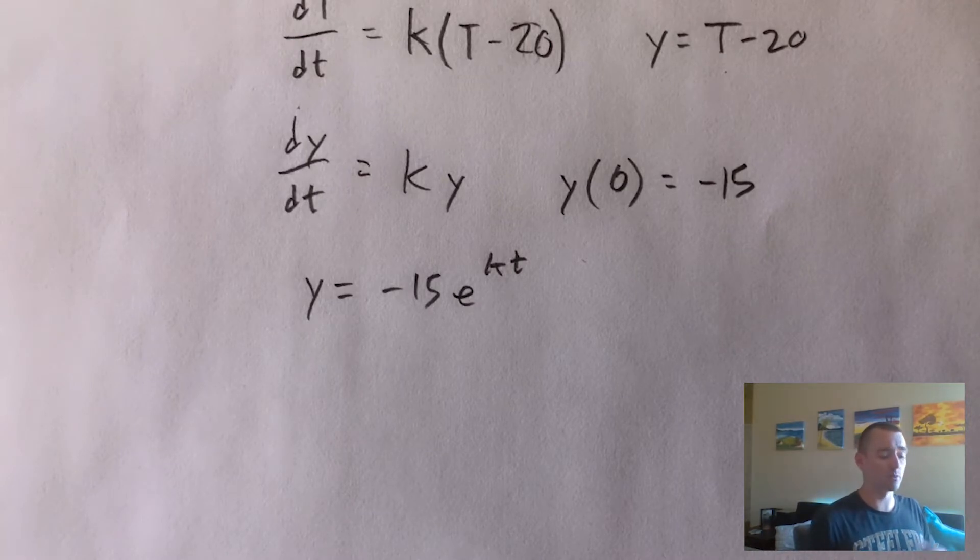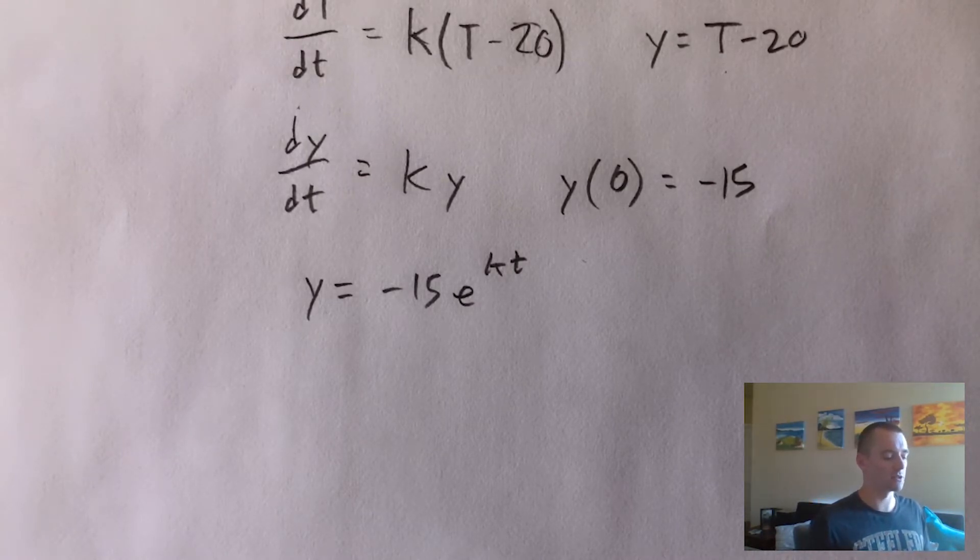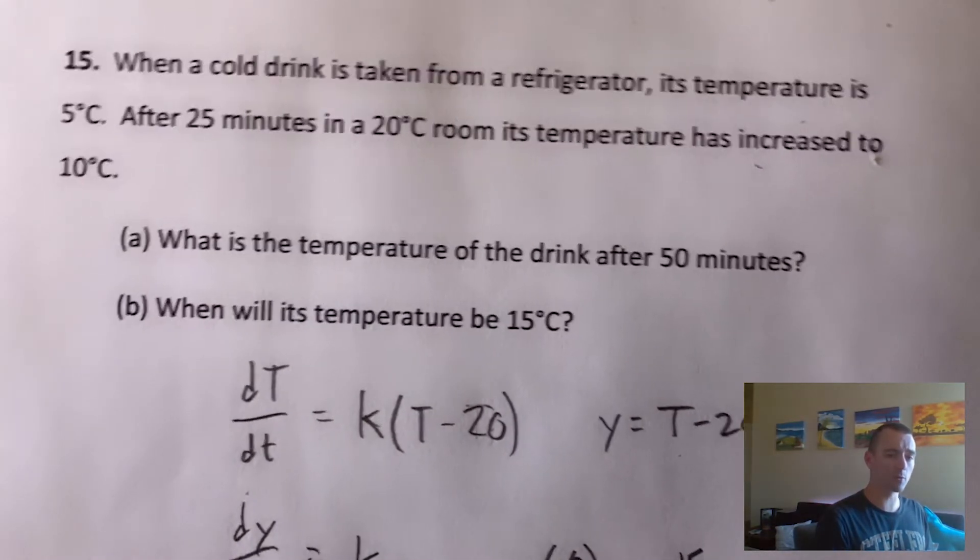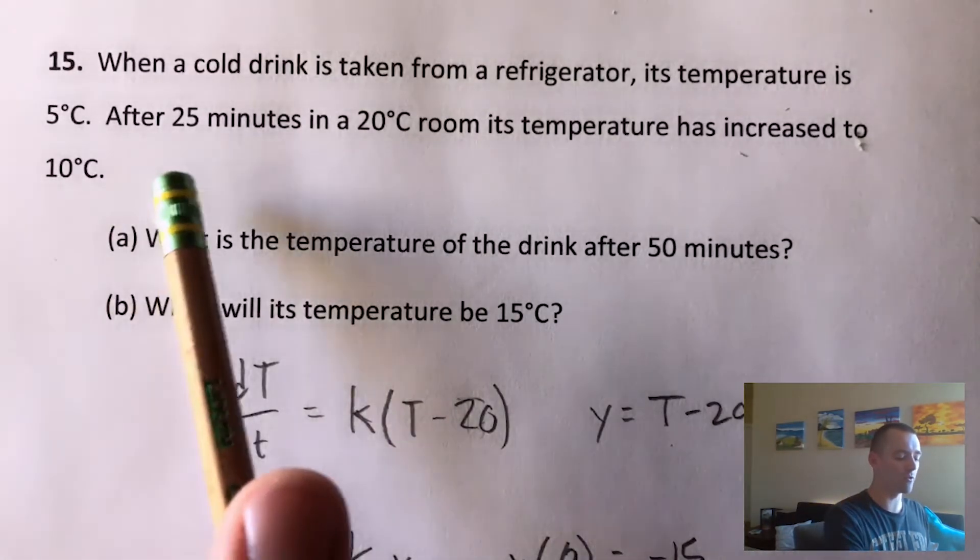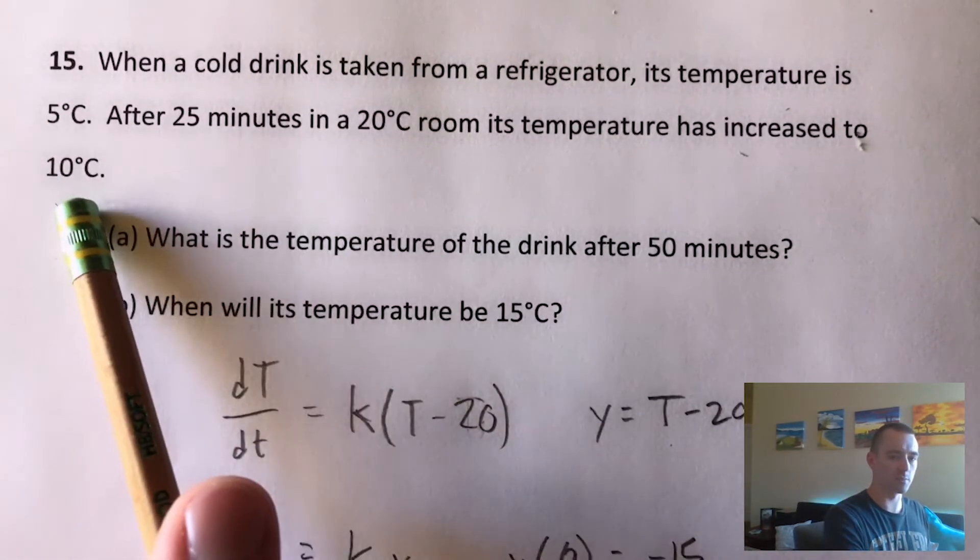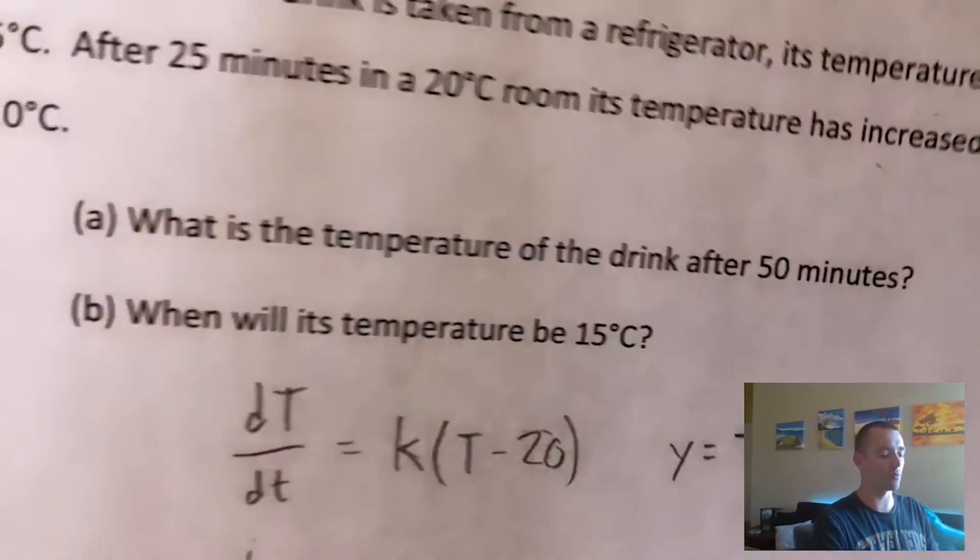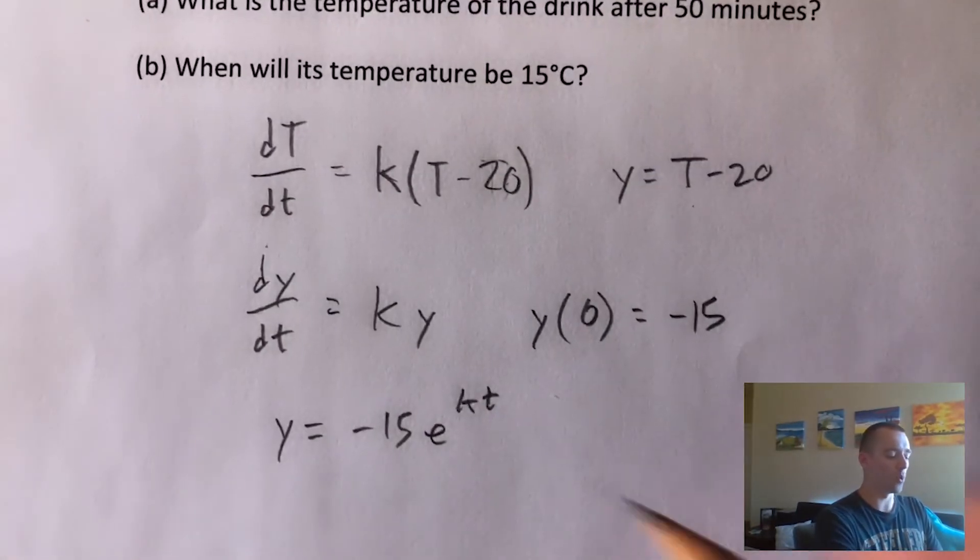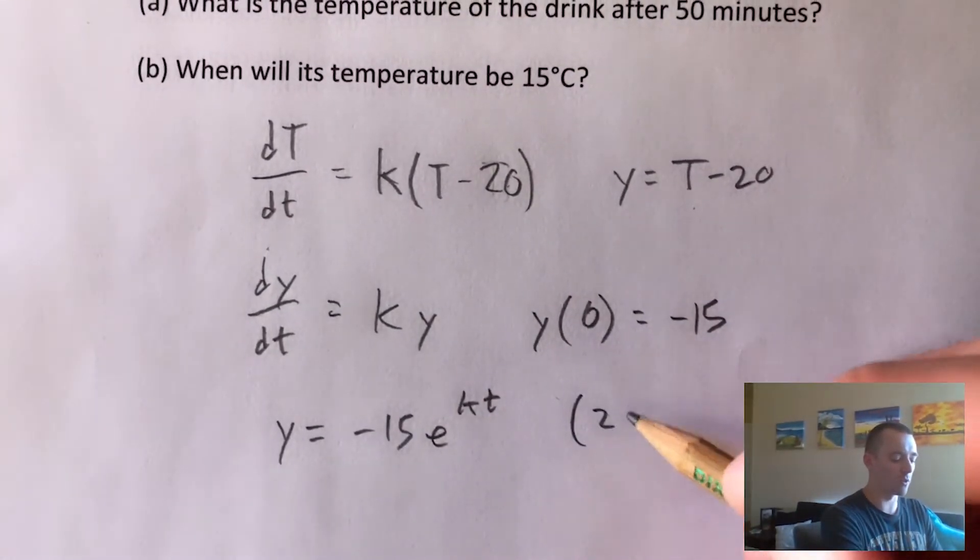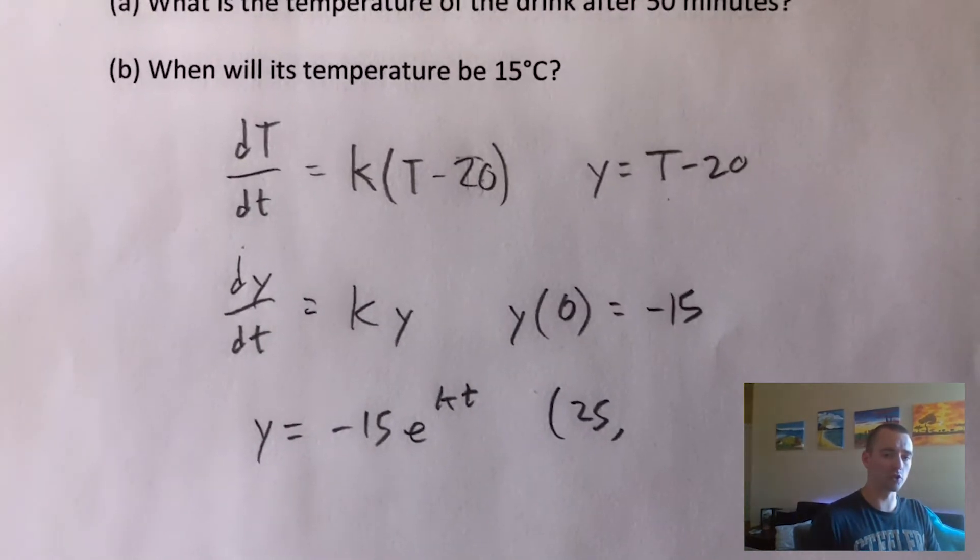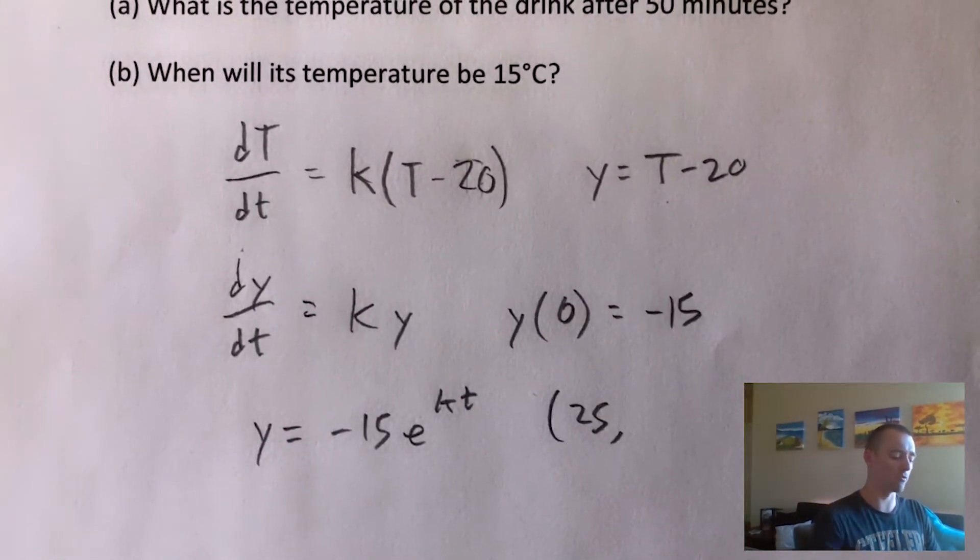We could say this is hours, we could say it's minutes, whatever works. In this case, let's just go ahead and say that t is going to be in minutes. So the other point that we're given is we know after 25 minutes, the temperature is going to be 10 degrees. So if our units are in minutes, and then degrees, obviously, is the output, the point that we know when t is 25, 25 minutes, the temperature of the drink is 10 degrees.